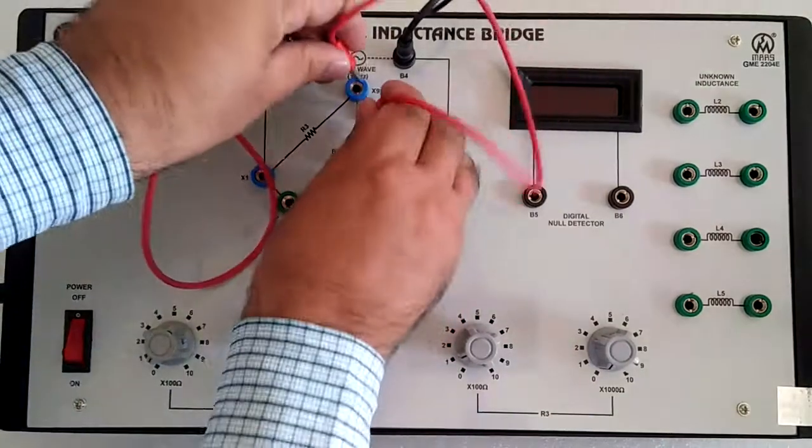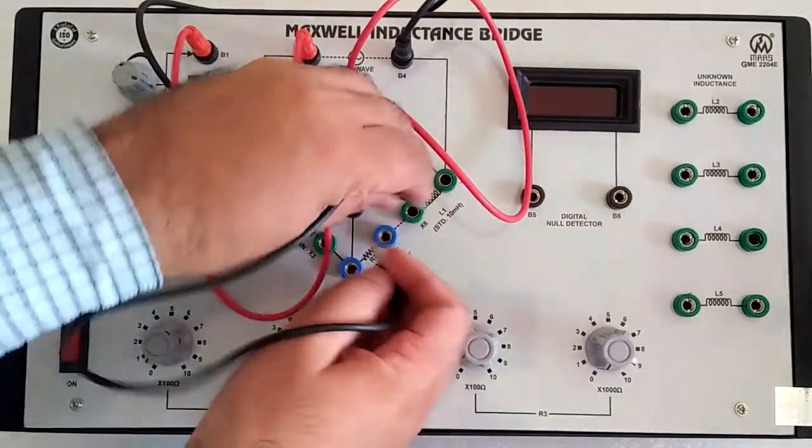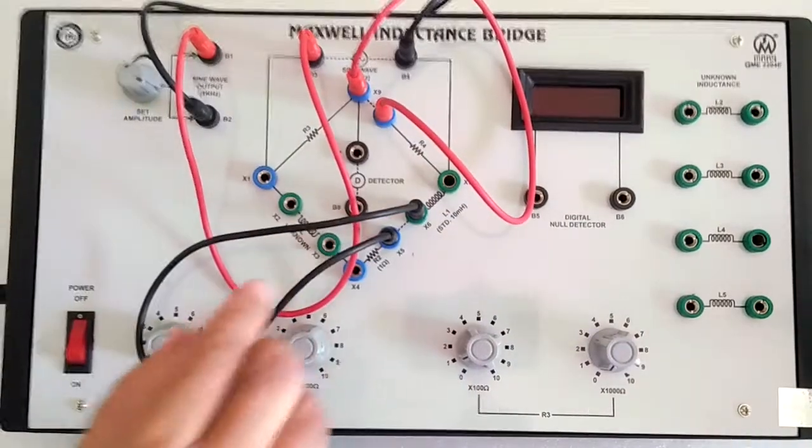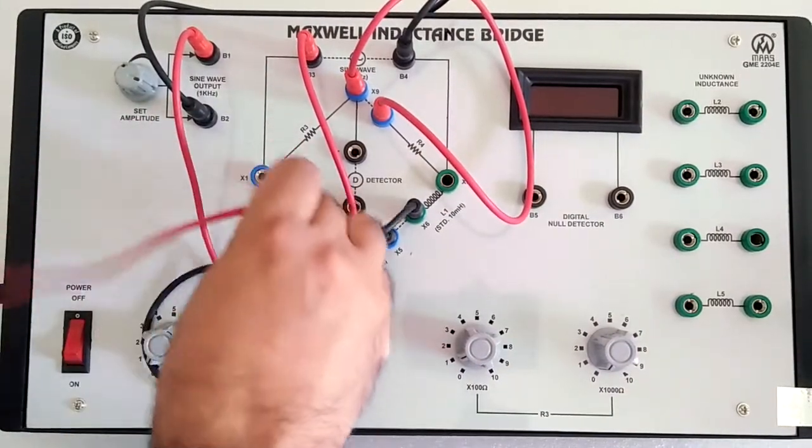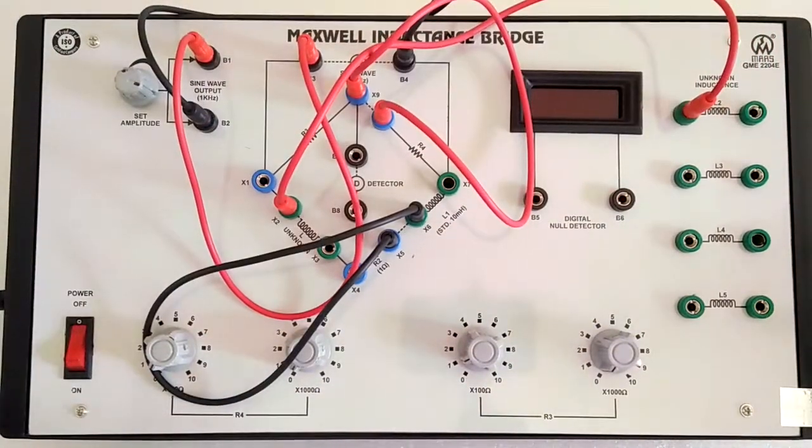X8 to X9. All the dotted lines have connections. You have to make them according to the manual. That is to record the unknown inductance.